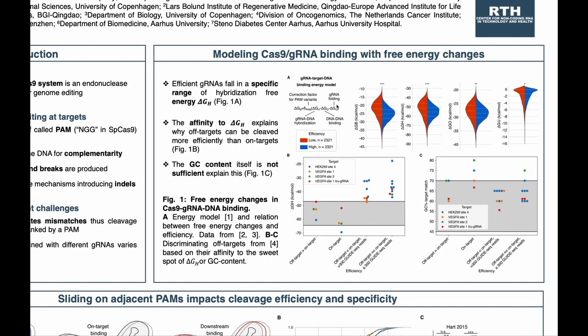The residual binding energy is multiplied by a correction factor that depends on the PAM, which is simply one in the case of the NGG PAM. But for alternative PAMs like NGA and NAG, this is a value lower than one, because these PAMs are still tolerated but with lower frequency compared to NGG.